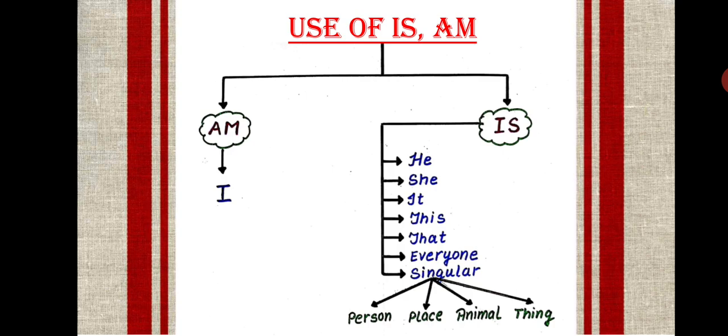Then comes singular. So first is singular person. For example, Rahul is playing. Here is is accompanying Rahul, and Rahul is a single person. We are talking about a single person.